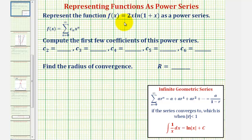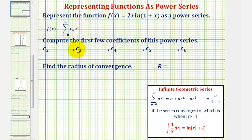We want to represent the function f(x) equals 2x times the natural log of the quantity (1+x) as a power series. We'll compute the first few coefficients of the power series, where c sub 2 is the coefficient of the degree two term, c sub 3 is the coefficient of the degree three term, and so on. We also want to find the radius of convergence.